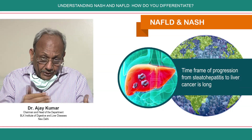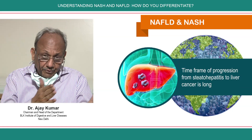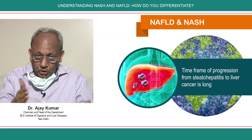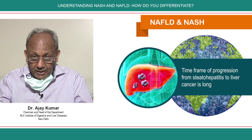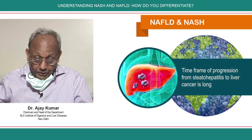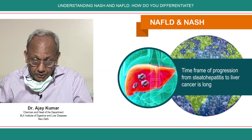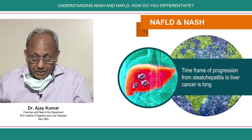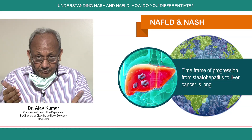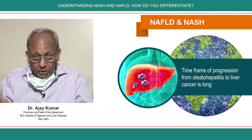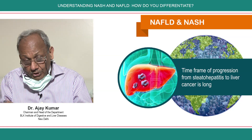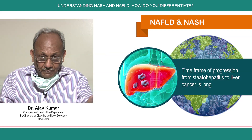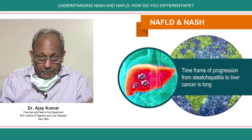The time frame may be long. Progression from simple hepatitis to cirrhosis may take 10 to 15 years, and from steatohepatitis or cirrhosis to liver cancer it may take further more years. But it's very important to understand because, as we discussed, it's very common, so even these percentages make a huge chunk of population.